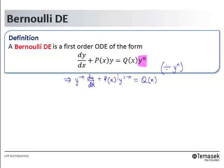This prompts us to the use of substitution and we let v, new variable, equals y to the power 1 minus n.